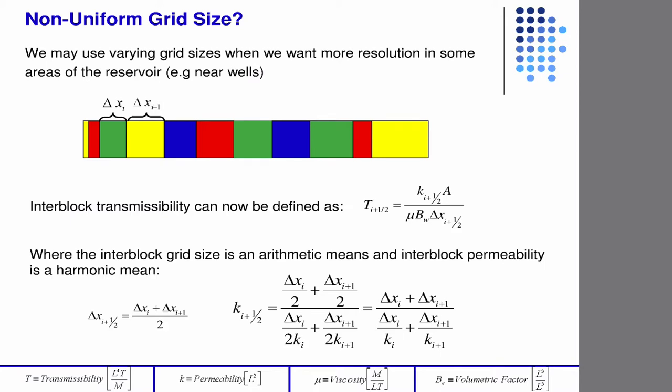So what would a case be where you have steep variations in pressure in the reservoir? Near a fault, near a wellbore, exactly. So those are two perfect examples of when you'd want to have refined or smaller grids.